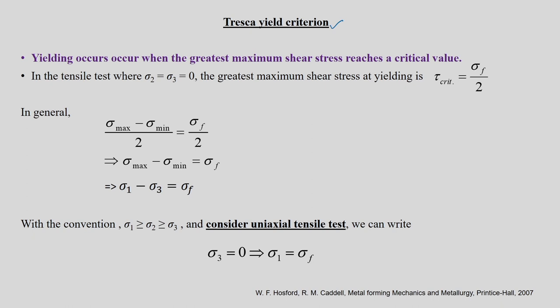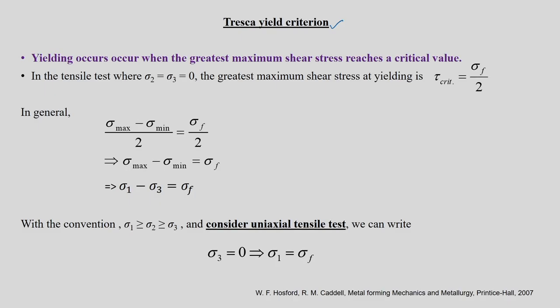The first one is called the Tresca yield criterion. We are going to discuss one more yield function after this. And a little later in this course we are going to introduce 2-3 other yield functions briefly, not in detail. These two we are going to discuss in detail. The first one is called the Tresca yield function or yield criterion.